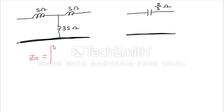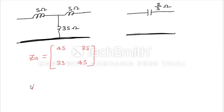We can find the Z-matrix easily for this network. Tell me: Zd is 4s, 3s and 3s, and then 4s. But we need the Y-matrix, and here we have a parallel connection.